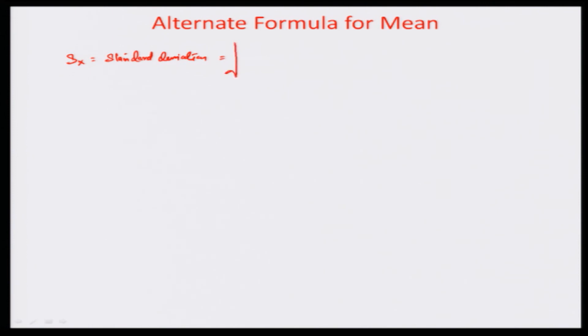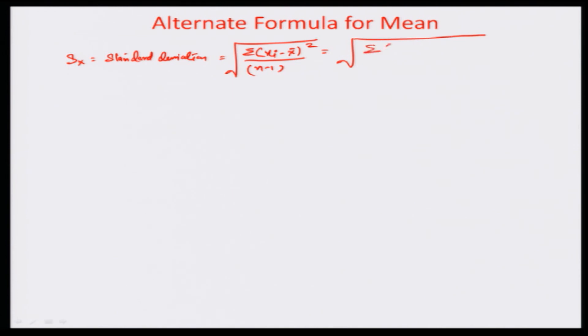The standard deviation s_x of a distribution can be represented as the square root of sigma (x_i minus x-bar) squared divided by n minus 1. This can further be represented as sigma of x_i squared plus x-bar squared minus twice x_i times x-bar, divided by n minus 1.